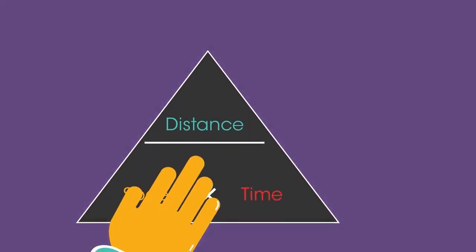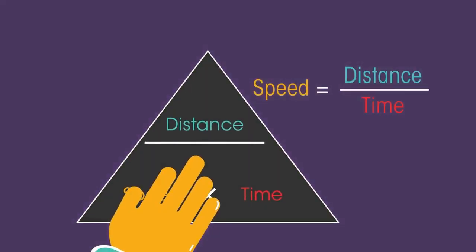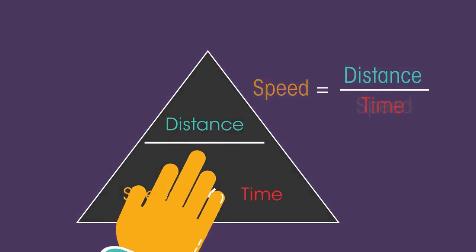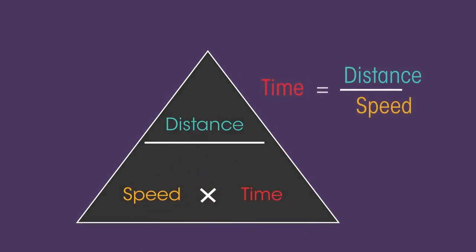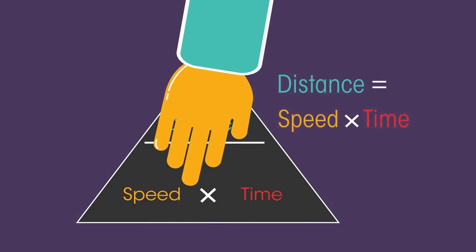Speed equals distance divided by time, time equals distance divided by speed, and distance equals speed multiplied by time.